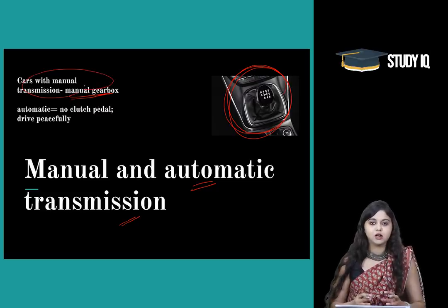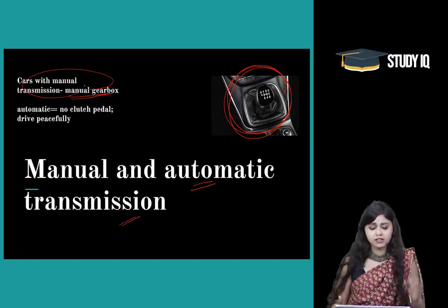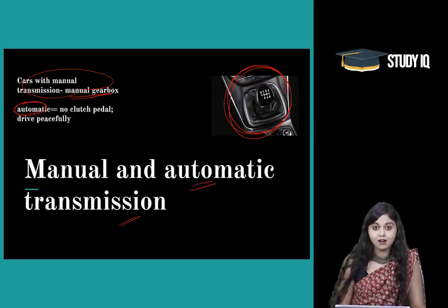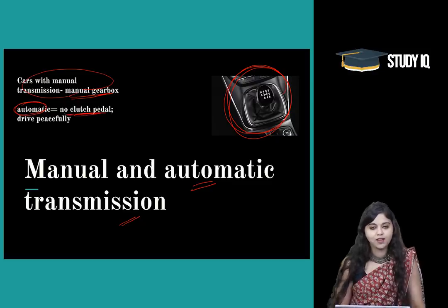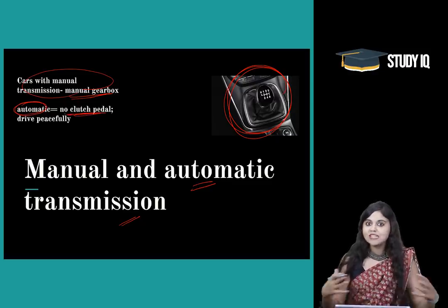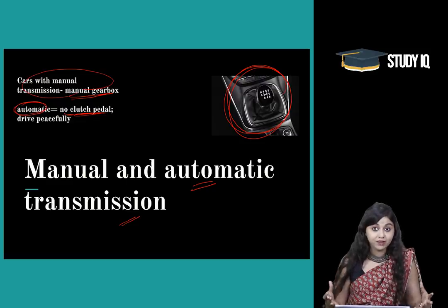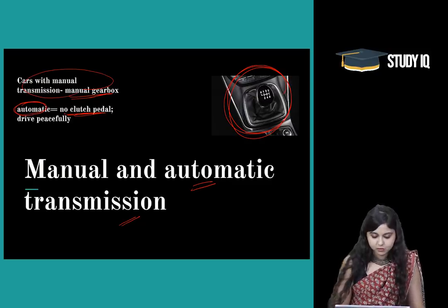Or it is an automatic car, which is very easy and comfortable to drive, particularly when we go through so much traffic on a daily basis. We have an automatic car or automatic transmission in which there is no clutch pedal and you can drive very peacefully. All the car categories we will see are available in two variants — either manual transmission or automatic transmission.